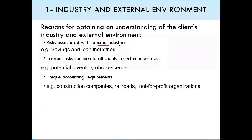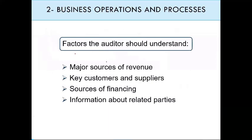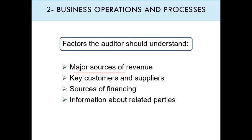We discussed the risk associated with specific industries — inherent risk common to all clients in a certain industry — and unique accounting requirements. We also started to talk about business operations: auditors have to be aware of the major sources of revenue, key customers and suppliers, sourcing of finance, and information about related parties.